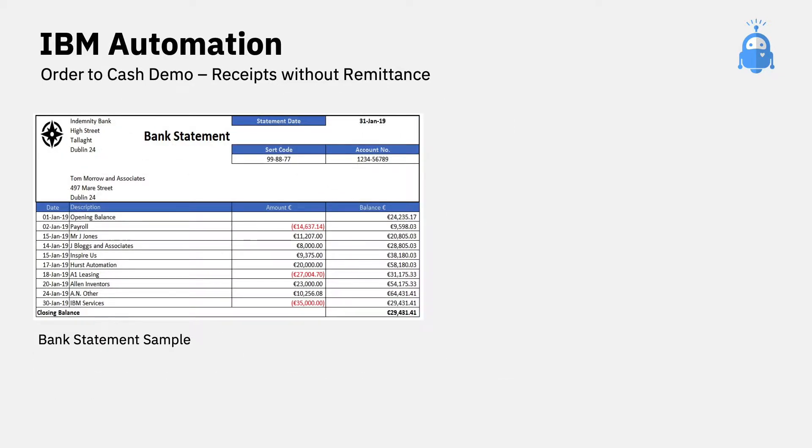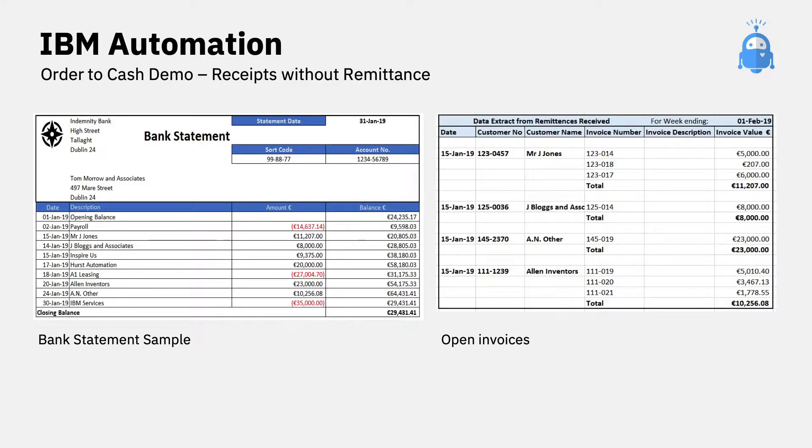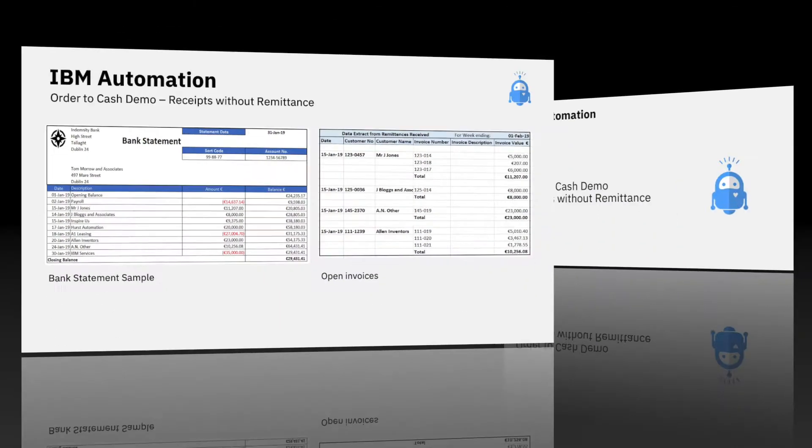In the next three minutes, we will see how IBM's Order to Cash digital worker can automate this process, focusing on two different scenarios.